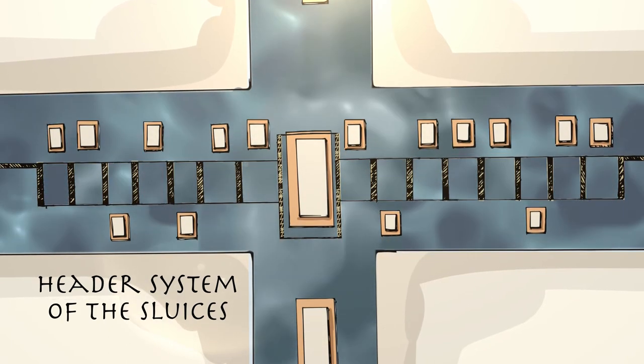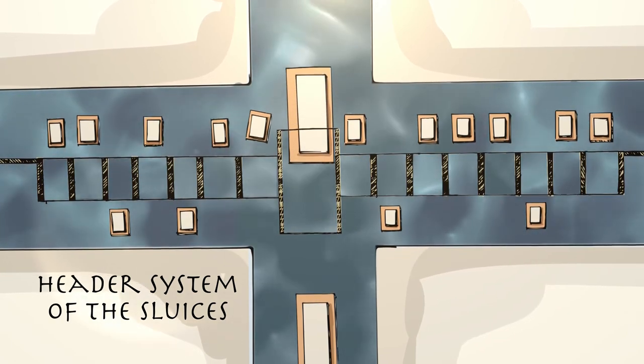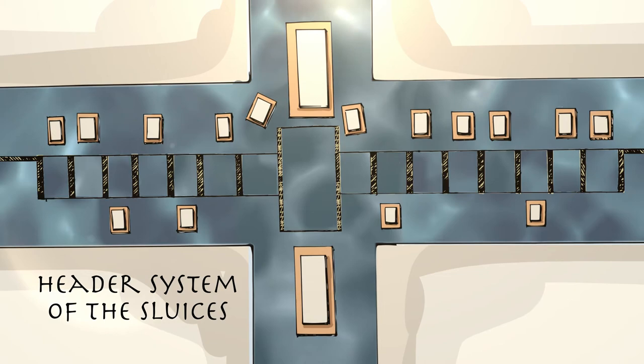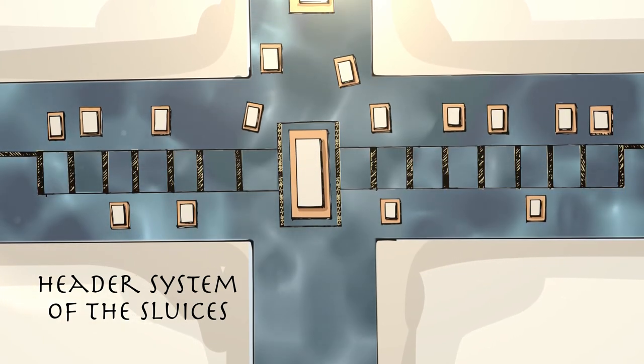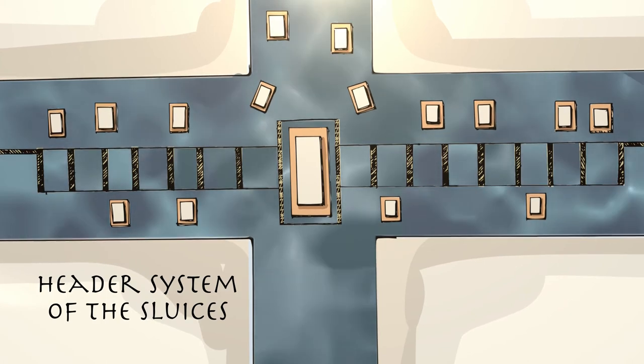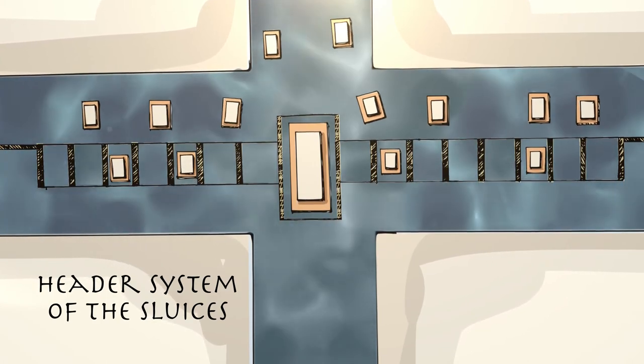Every header system between Khufu quarry and the pyramid base had 15 sluices, each with one sluice in the center for the greatest stones, and 14 additional sluices for average-sized stones. The canal from Khufu quarry would have supplied a constant flow of stones and plenty of water necessary to construct the pyramid.